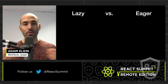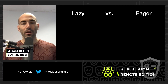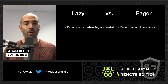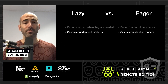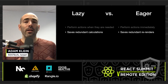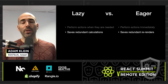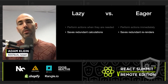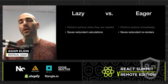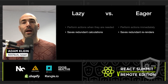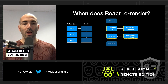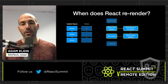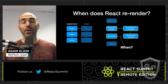So we have two modes — lazy or eager. With lazy, React only performs the actions when they are needed, saving redundant calculations and postponing them. With eager, actions are performed immediately and used to bail out, saving redundant re-renders. Now the final part: when does React decide to re-render?